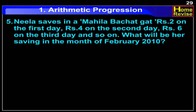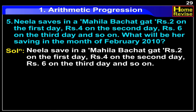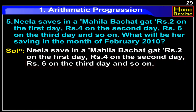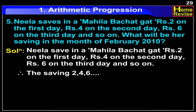Neela saves in a Mahila Bachatgat: Rupees 2 on the first day, Rupees 4 on the second day, Rupees 6 on the third day, and so on. What will be her saving in the month of February 2010? Solution: The savings 2, 4, 6 and so on are in arithmetic progression.